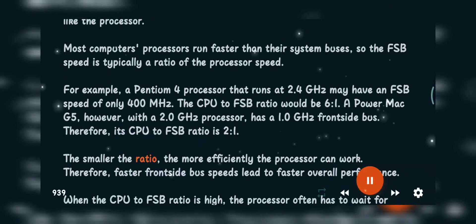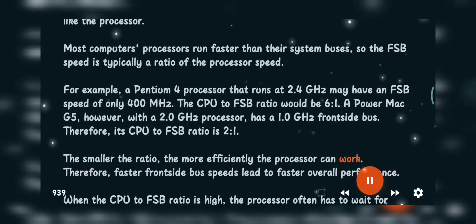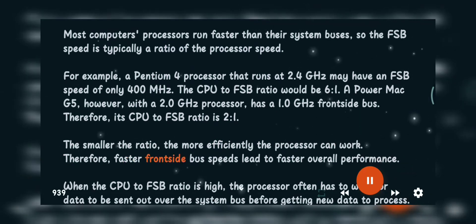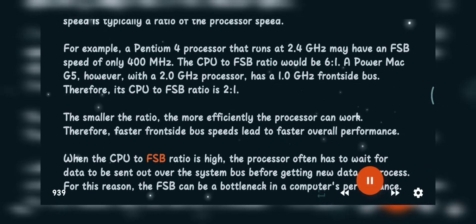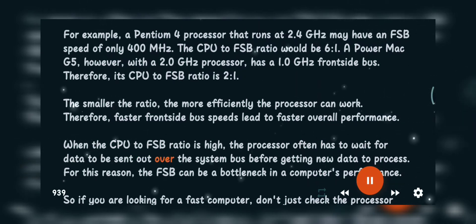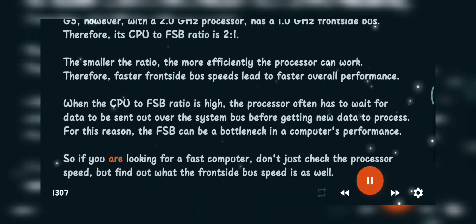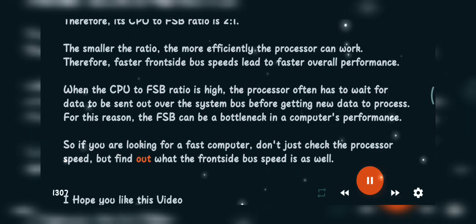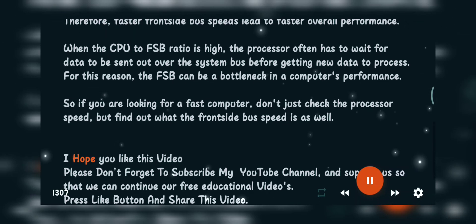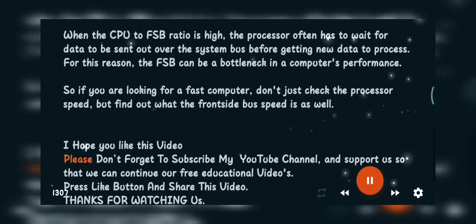The smaller the ratio, the more efficiently the processor can work. Therefore, faster Front Side Bus speeds lead to faster overall performance. When the CPU to FSB ratio is high, the processor often has to wait for data to be sent out over the system bus before getting new data to process. For this reason, the FSB can be a bottleneck in a computer's performance. So if you are looking for a fast computer, don't just check the processor speed — find out what the Front Side Bus speed is as well.